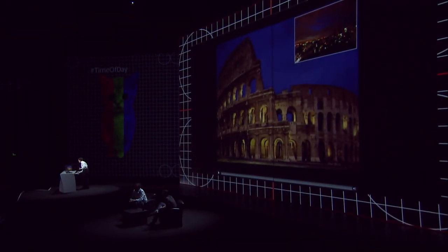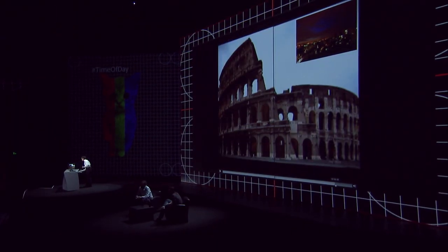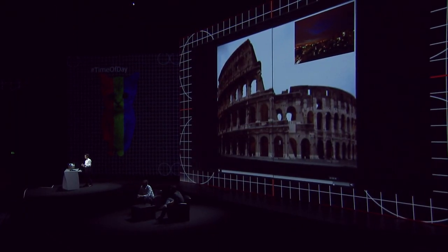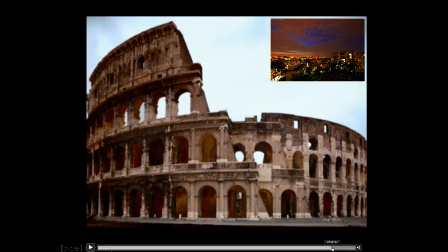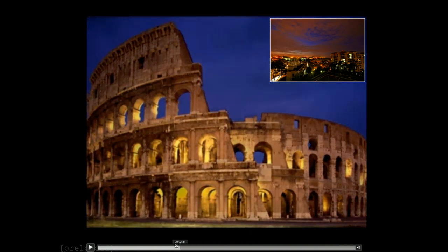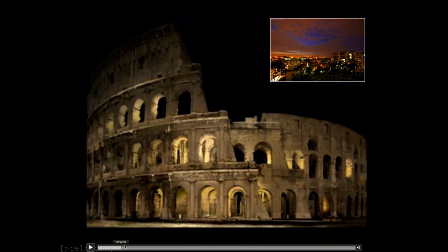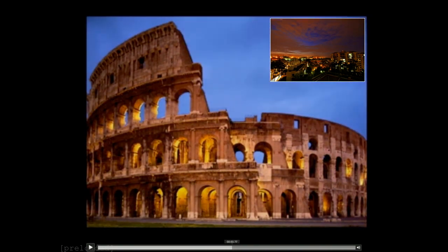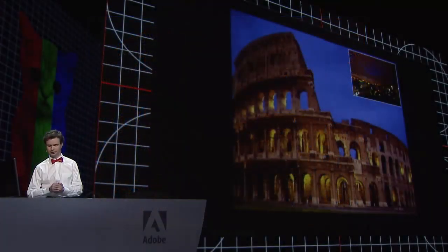The first thing I can do is show you what this scene would look like during the day, like this one. But where it starts to be powerful is that I can actually control everything and choose exactly the time of day I want from this single picture — no user interaction beside what you see me doing right now. That was only the algorithm. I didn't do any Photoshop here.